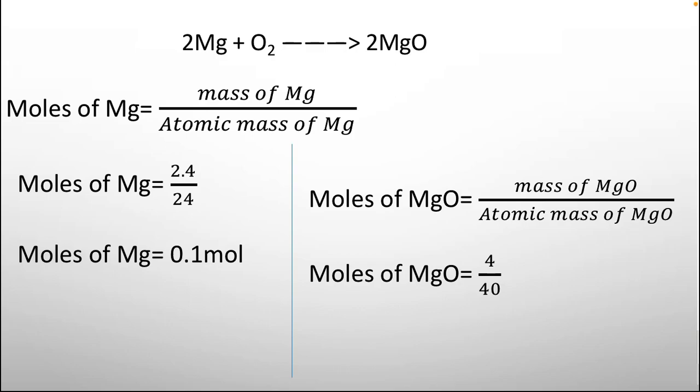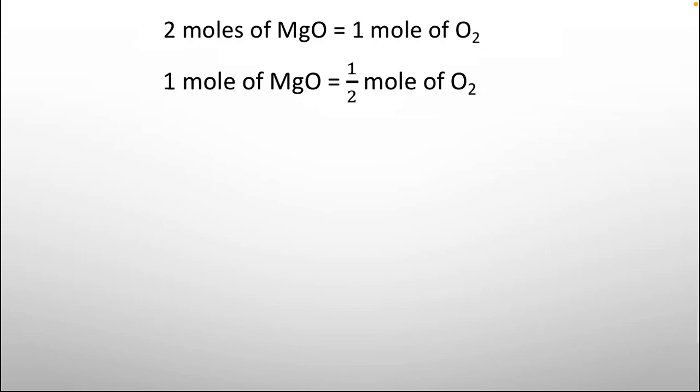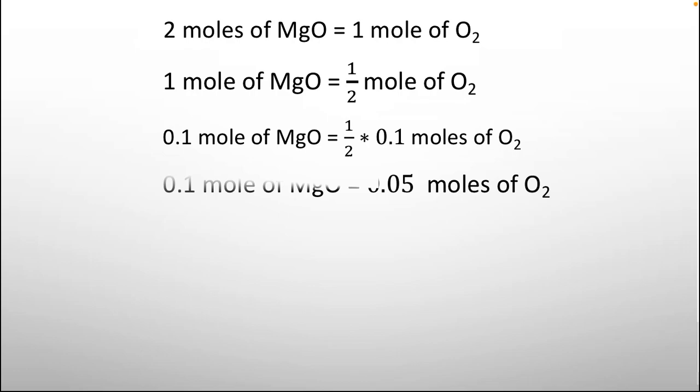And if we talk about the moles of magnesium oxide, and that is 4 grams is given, and 40 is actually the mass of magnesium and oxide. So, moles of magnesium oxide is 0.1 mole. Now, both the moles are similar, and we can relate it with the oxygen gas. 2 moles of magnesium oxide equals to 1 mole of oxygen. So, 1 mole of magnesium oxide will give you half mole of oxygen. This is the unitary method. The answer, the next step is 0.1 mole of magnesium oxide will give you half multiplied by 0.1 mole of oxygen gas. The answer we get is 0.05 moles of oxygen.